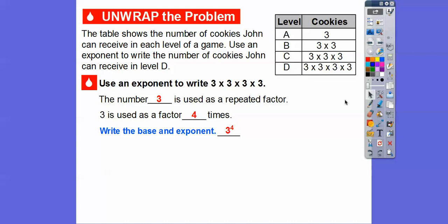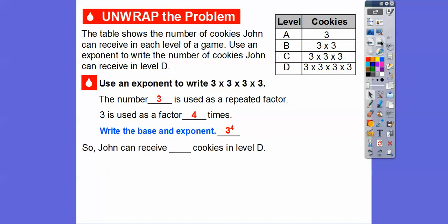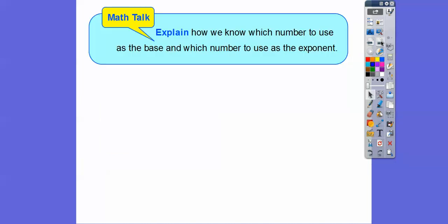That's a lot of cookies, by the way. 3 times 3 is 9, 9 times 3 is 27, and 27 times 3 — think of it this way: 3 times 3 is 9, and another 3 times 3 is 9, so 9 times 9 is 81. A lot of cookies! So John is going to receive 3 to the fourth cookies in level D.